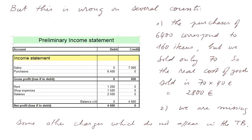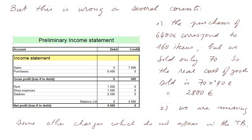But this is wrong on several counts. First of all, the purchases of 6,400 euros correspond to all the items we purchased — 160 items — but we sold only 70. So the real cost of goods sold is 70 multiplied by the purchasing price of 40 euros per item. Purchases is not really the cost of goods sold; the cost of goods sold, which would appear in the income statement, is 2,800.